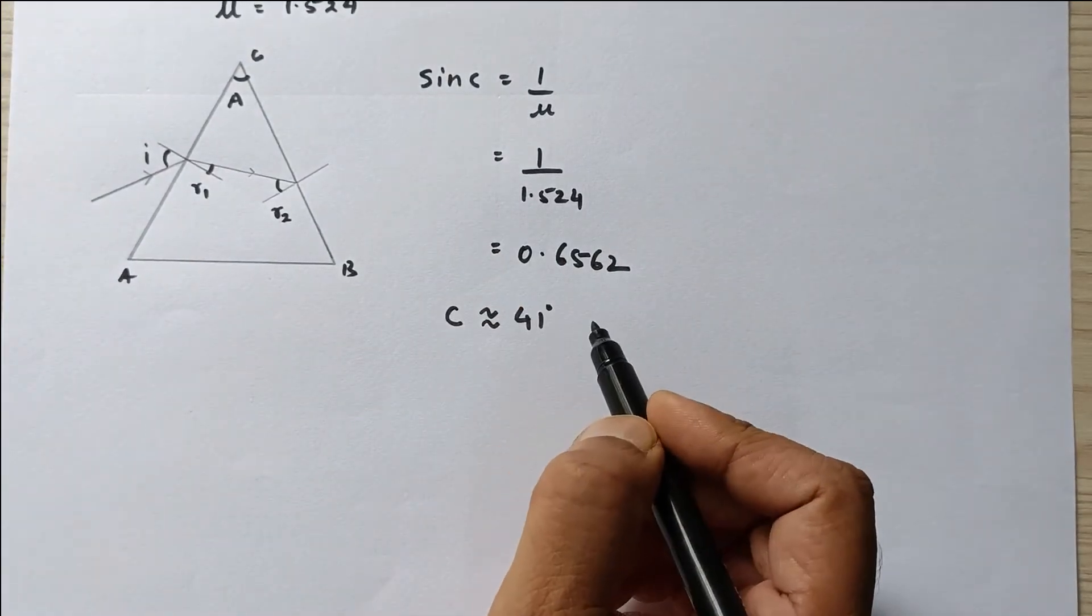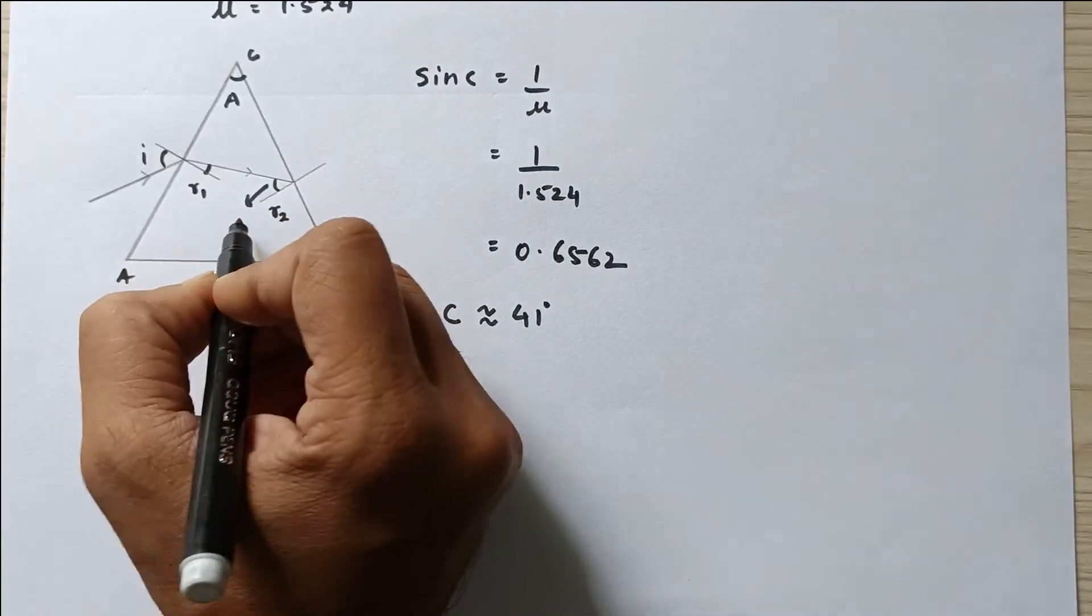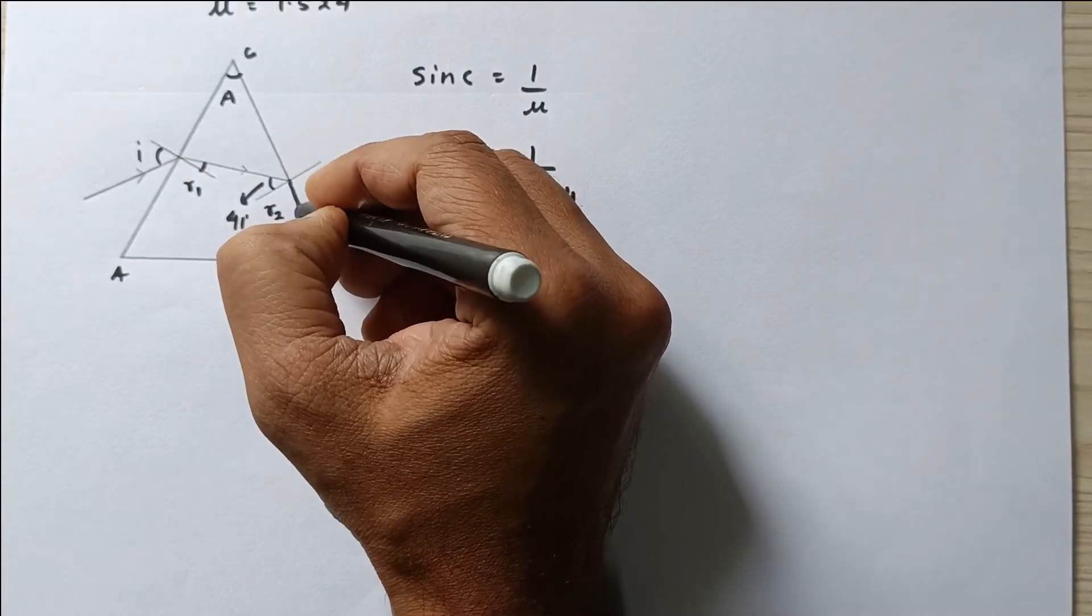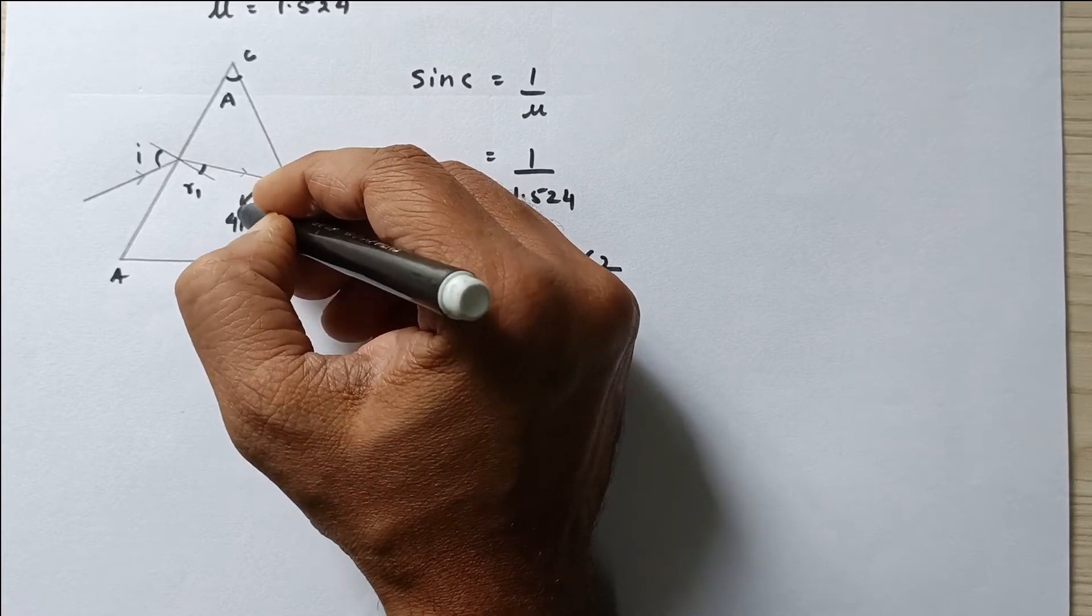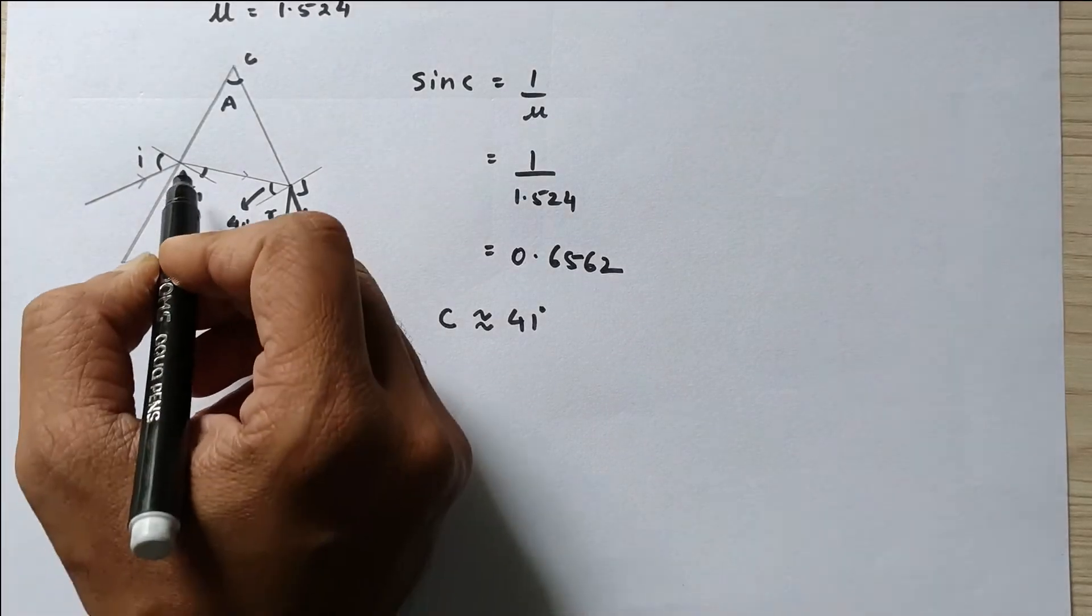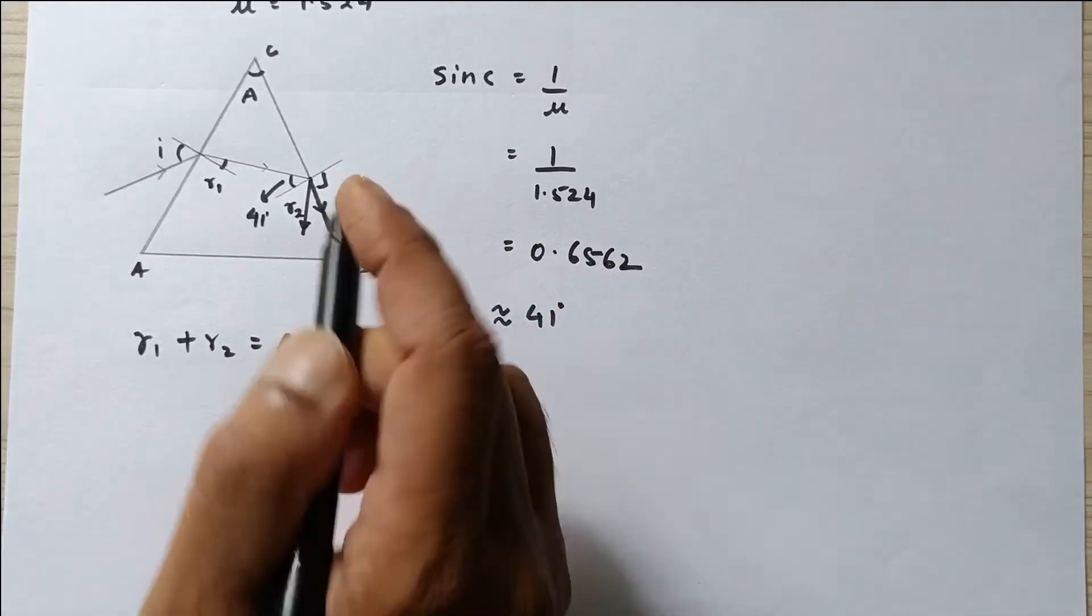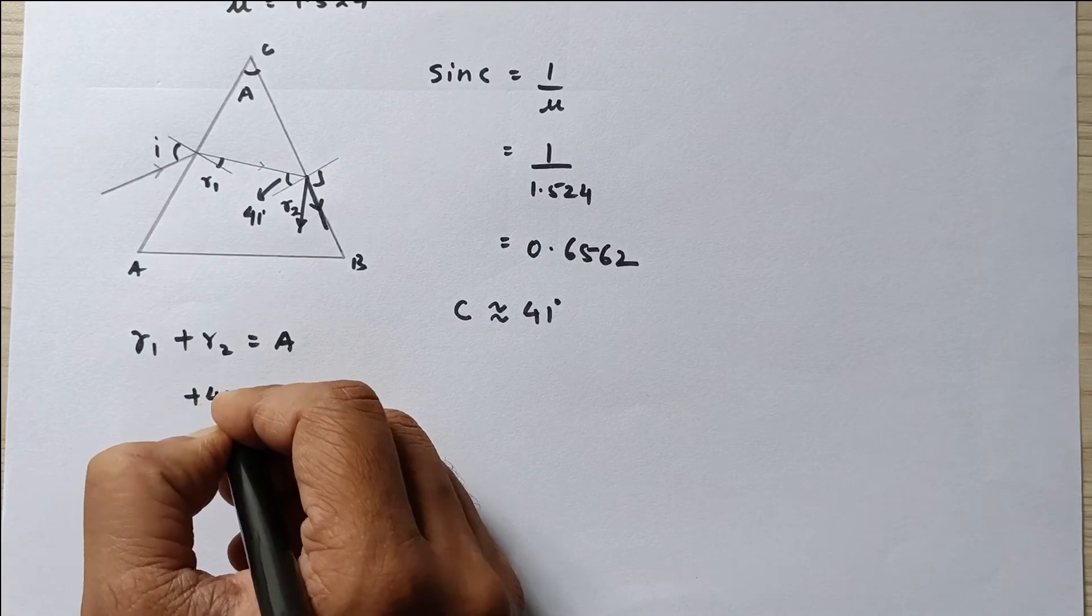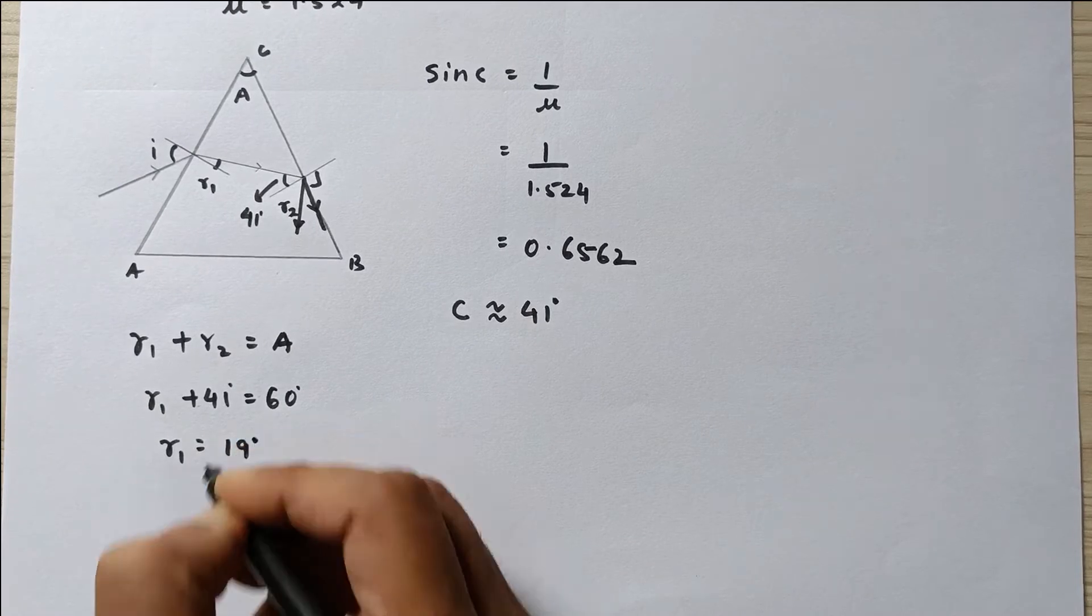Now we are just supposed to assume that this angle becomes 41 degrees. So if this angle becomes 41 degrees, the angle of refraction becomes 90 degrees, and slightly if I increase the angle beyond 41, this ray will be inside. Now we know that in case of prism R1 plus R2 is equal to A. A value we know is 60 degrees, R2 is 41 degrees. So R1 value from here can be easily calculated as 19 degrees.